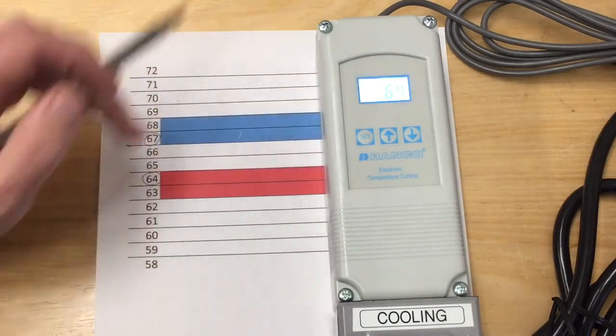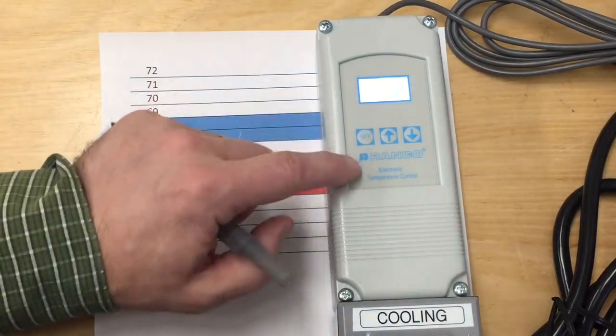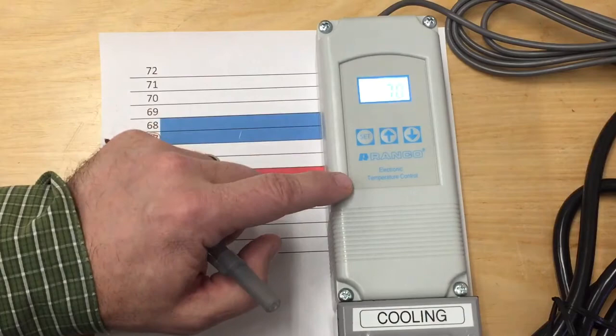On the heating side we enter 64 degrees, set our differential to two, and choose heating, then set.